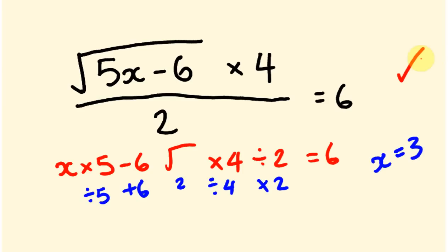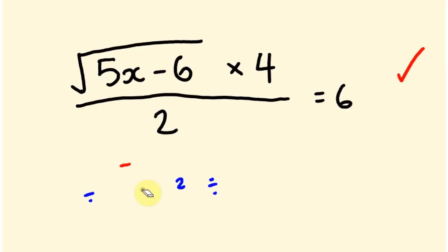Hopefully that was some help. You will hit the stage where you won't need to write out that intermediate step — you'll automatically start doing them in your head. For the last example you'd just think: 6 × 2 = 12, ÷ 4 = 3, square it to get 9, plus 6 = 15, ÷ 5 = 3. That's how you solve these instantly. We'll see you next time!